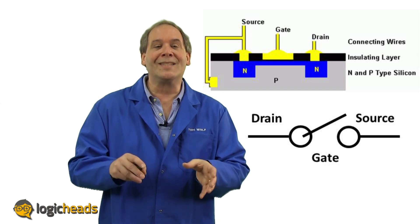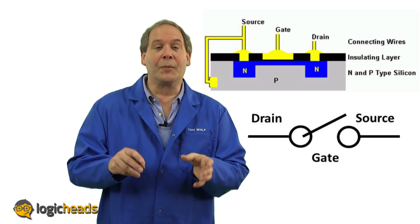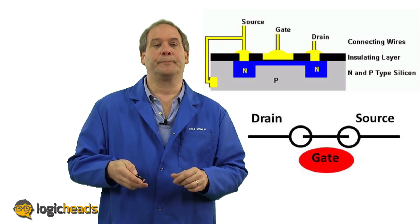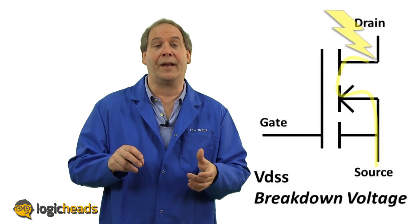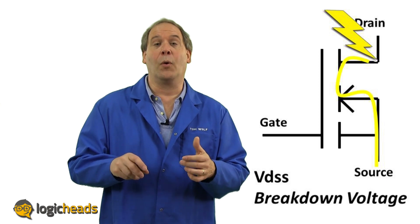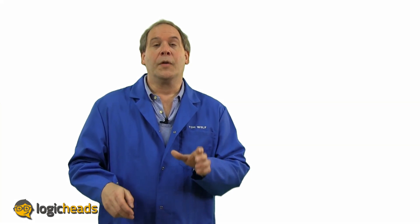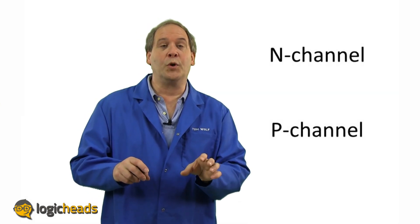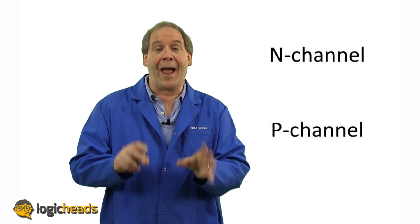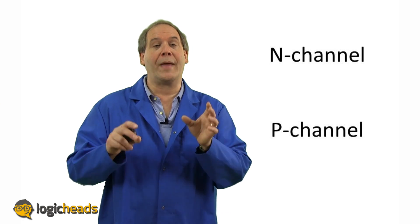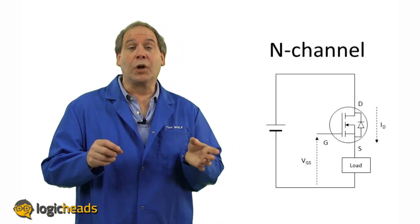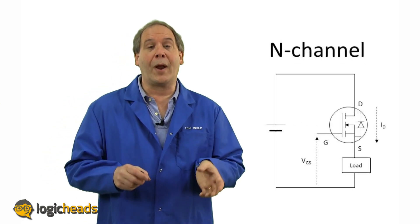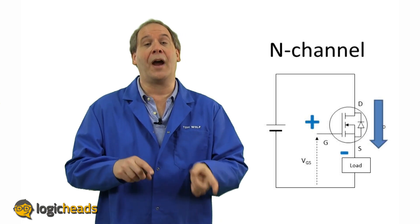Functionally, it looks just like an electromechanical relay. Apply the right voltage to the gate, and the switch contacts will close. Just like all semiconductor devices, it has a maximum voltage it will tolerate across the contacts. This is known as the VDSS, or the breakdown voltage.